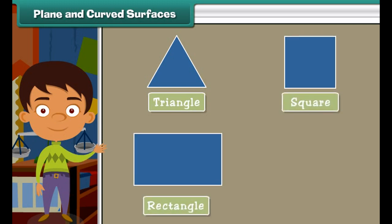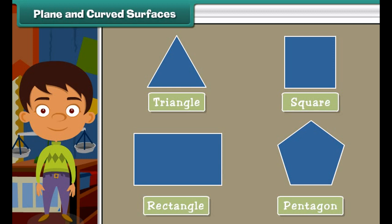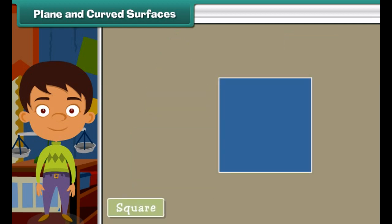A polygon is a plane figure made of three or more sides. Various types of polygons are triangle, square, rectangle, and pentagon.